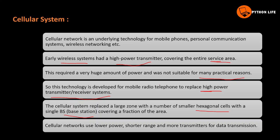Compared to a large high-power transmitter, the cellular system has much greater capacity. The cellular system uses small base stations. Cellular networks use lower power, shorter range, and more transmitters for data transmission, with many base stations transmitting and receiving signals.